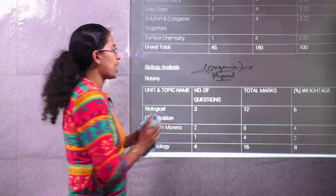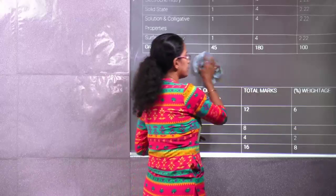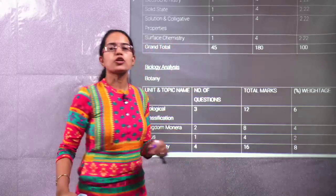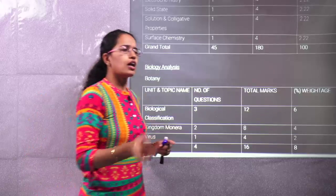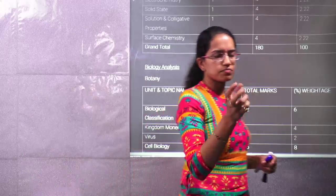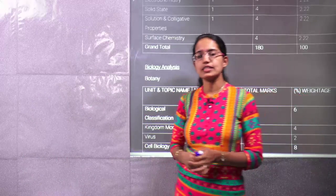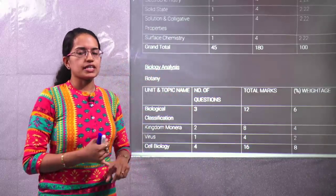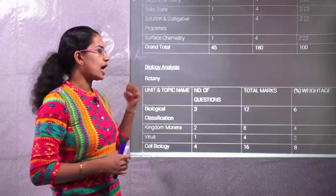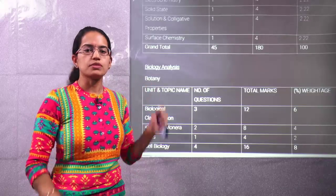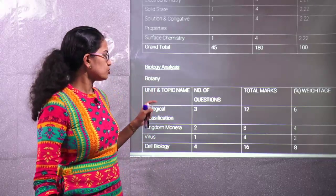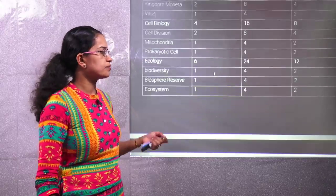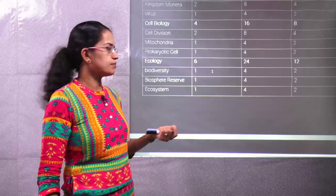Coming on to the botany and zoology sections — under botany, two topics are very important. First is the plant kingdom, and the second is the molecular basis of inheritance along with biotechnology and its applications. Molecular basis of inheritance covers genetics, and plant kingdom forms the basis of botany. These are very important sections. The plant kingdom especially has a lot to learn and remember, so make sure you cover and revise it well.